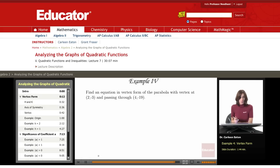Now, find an equation in vertex form of the parabola with vertex at 2, negative 3, and passing through the point 4, negative 19.